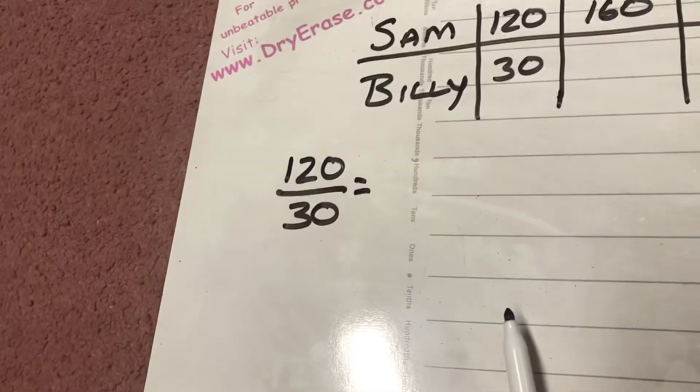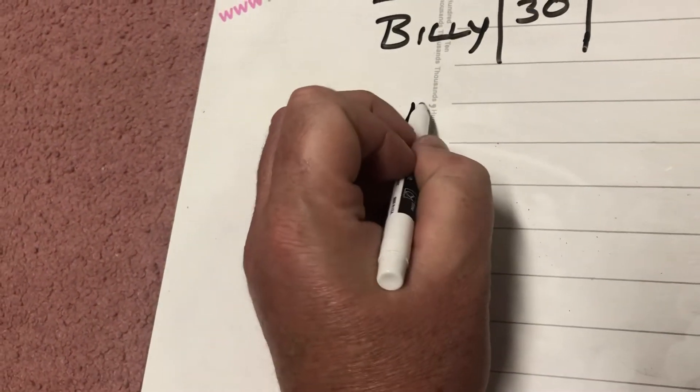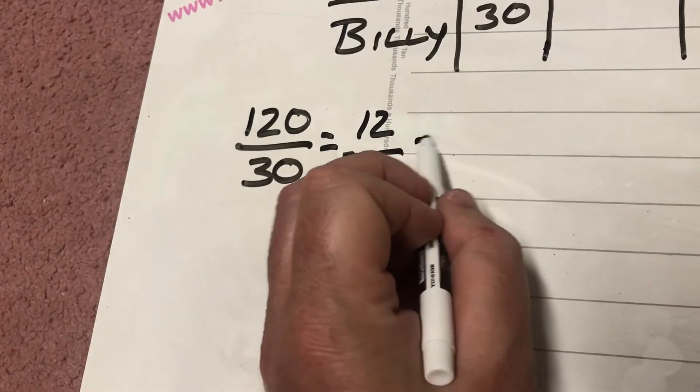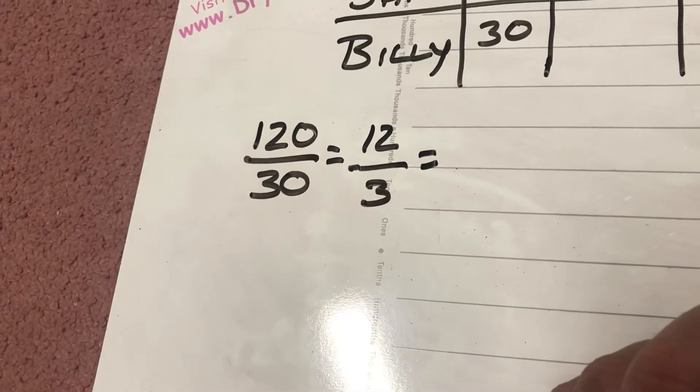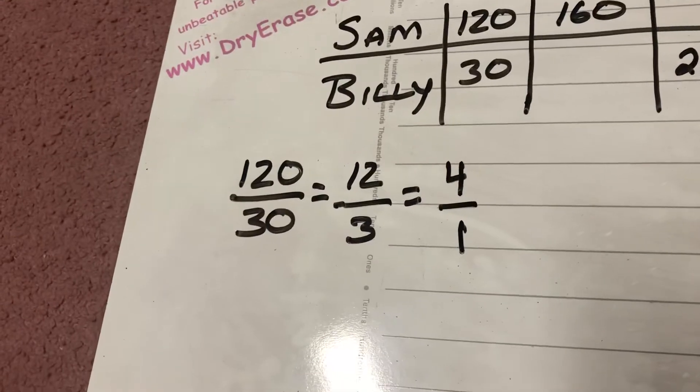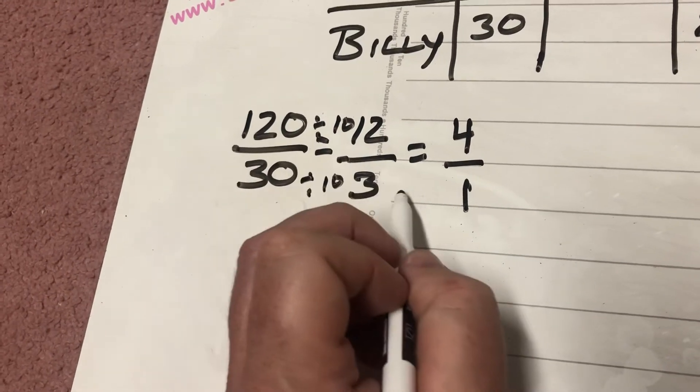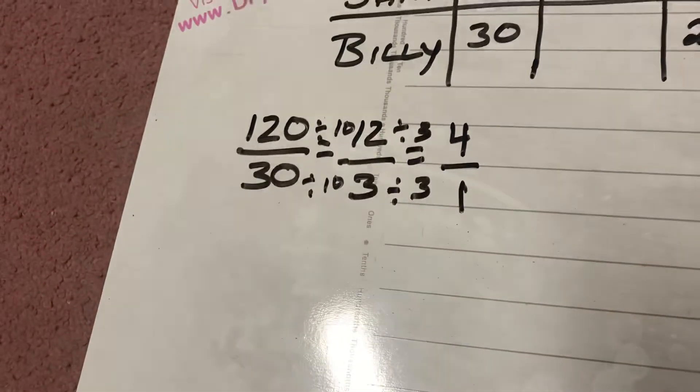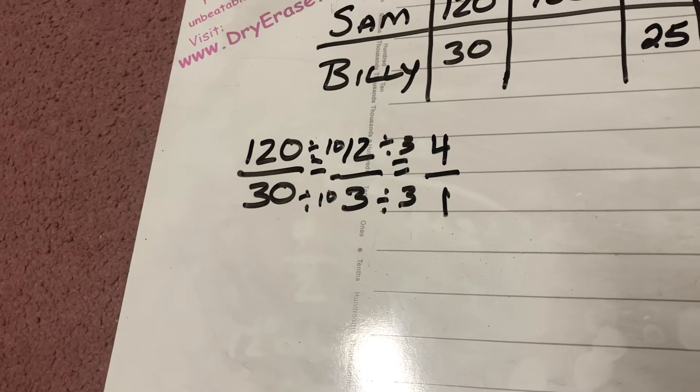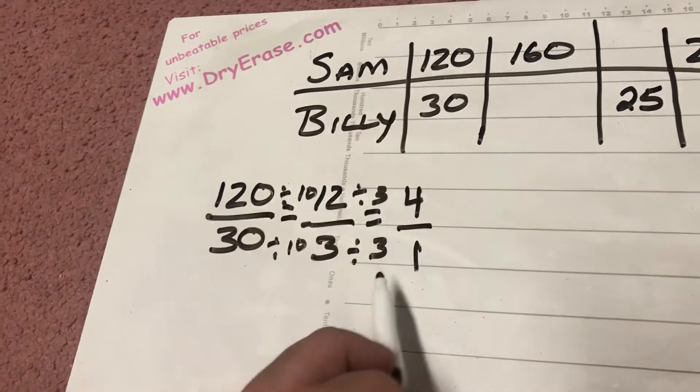I see that they both end in 0, so I use my rules of divisibility. Since they both end in 0, I can divide them both by 10. 120 divided by 10 is going to be 12. 30 divided by 10 is going to be 3. Well, I can simplify that because I can divide both numbers by 3. 12 divided by 3 is 4. 3 divided by 3 is 1. If I divide those both, the ratio is 4 over 1. So 120 over 30 equals 4 over 1.